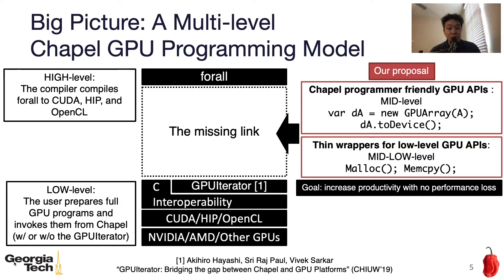Essentially, we will introduce the concept of a multi-level Chapel programming model that complies with Chapel's multi-resolution programming model. The highest and most intuitive one is the high-level model on your left, where the compiler compiles Chapel forward loops to GPUs. At the lowest level, the user prepares a full GPU program with or without the GPU iterator module. Since there's no appropriate medium-level approach, our proposal is to introduce medium-level and medium-low-level GPU API, which allows the user to stick with Chapel when they allocate GPU memory and transfer data between CPU and GPUs. Our goal is to increase productivity with no performance loss.